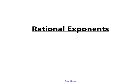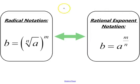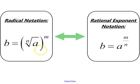Rational exponents. An expression written in radical notation has a radical with an index, the radicand, and that entire term is grouped and raised to an exponent.